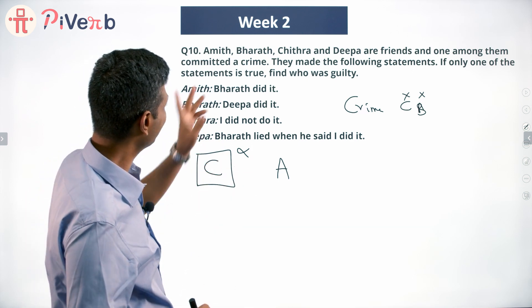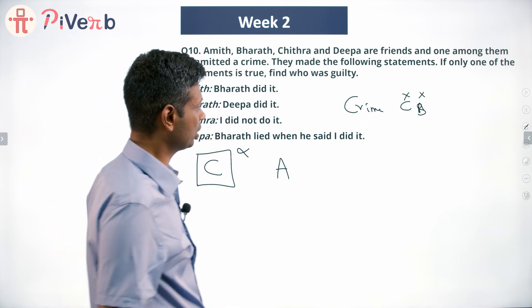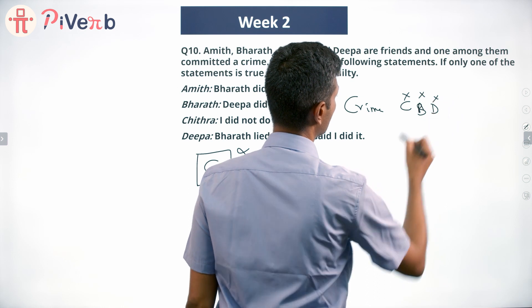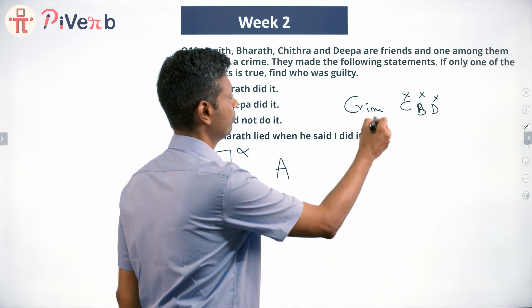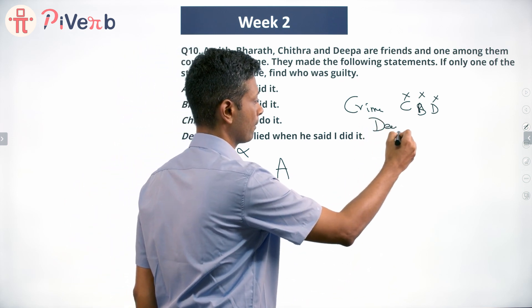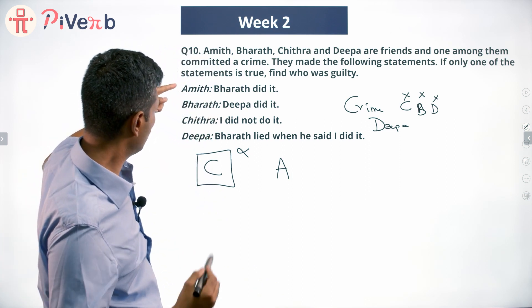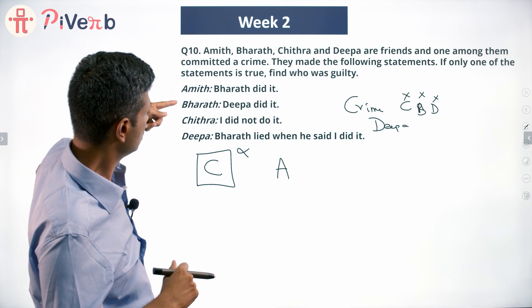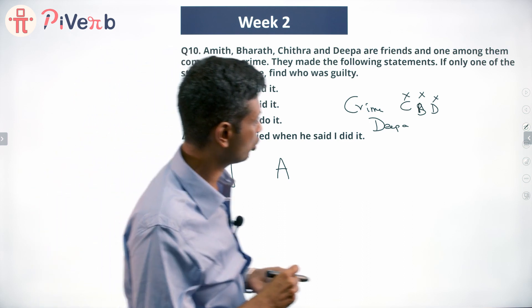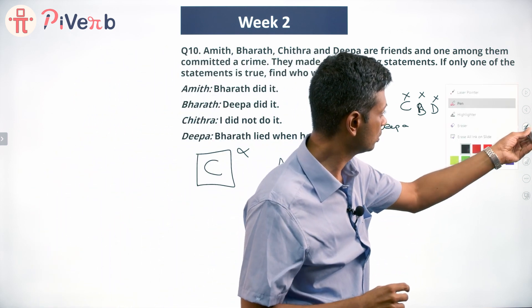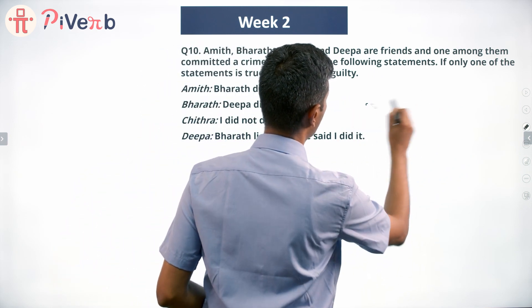If A lied, Bharat did not commit the crime. If B lied, Deepa did not commit the crime. Chitra is saying she did not do it — she did not commit the crime either. So the crime was committed by Deepa — but wait, statement B 'Deepa did it' would then be true. I'm getting something wrong, so let me go over this one more time.